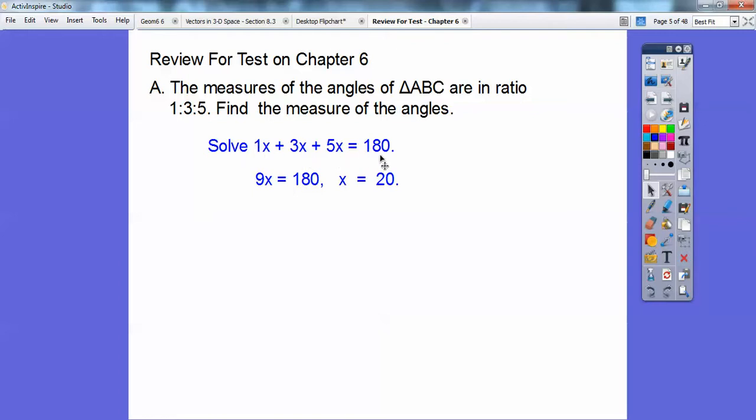Then we've got to plug in 20 for 1x, 20 for 3x, and 20 for 5x. And then when I do that, I get 20 degrees, 60 degrees, and 100 degrees. And these have the ratio of 1 to 3 to 5, alright?